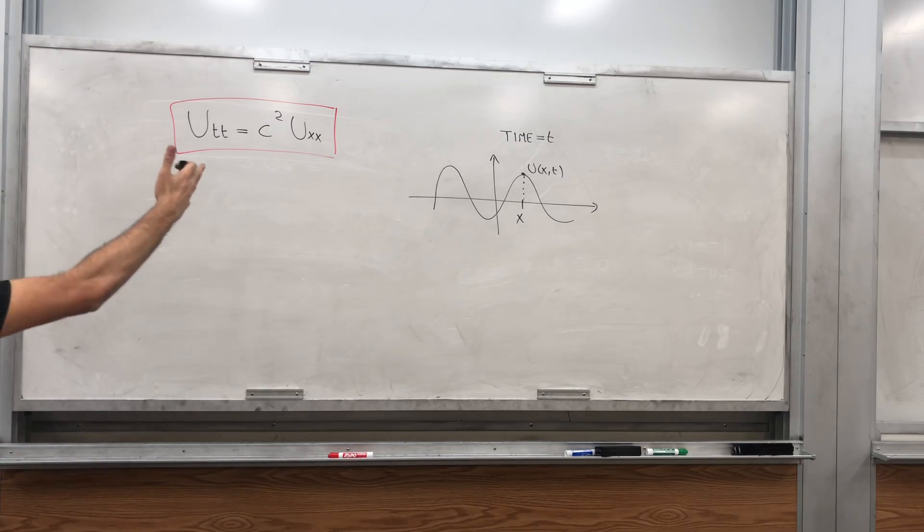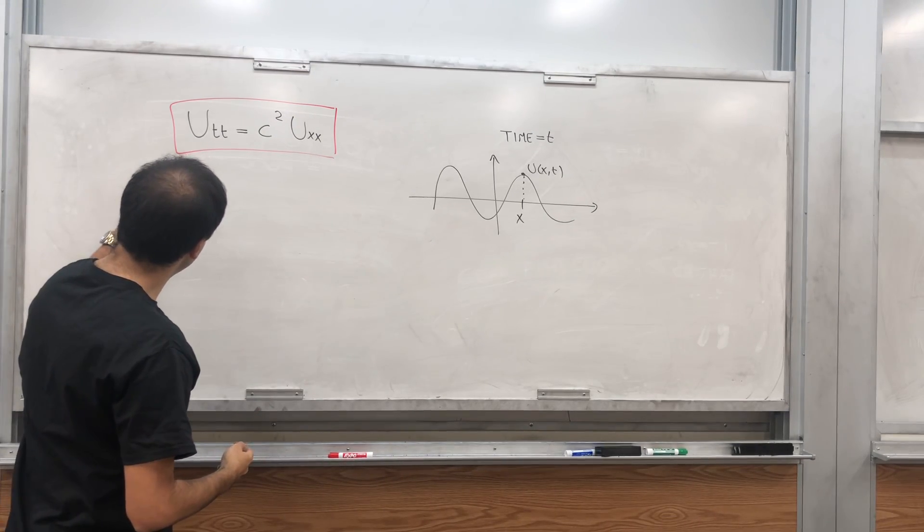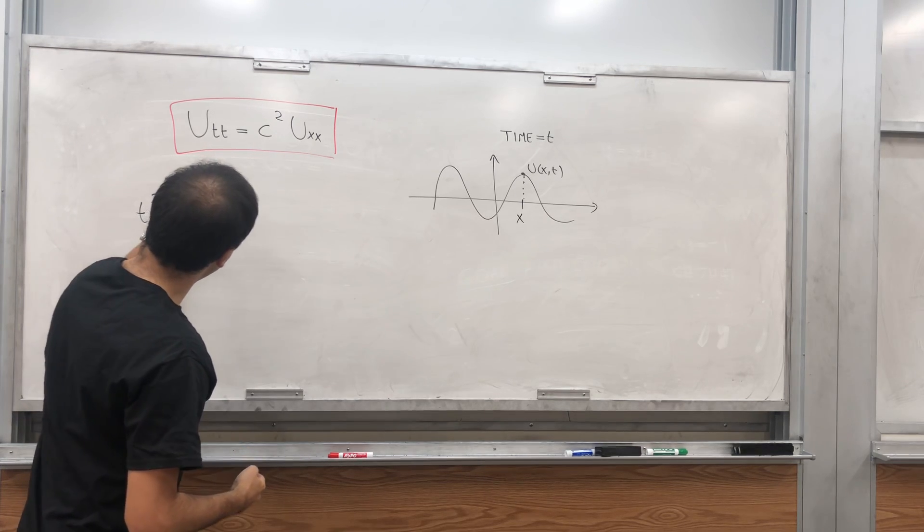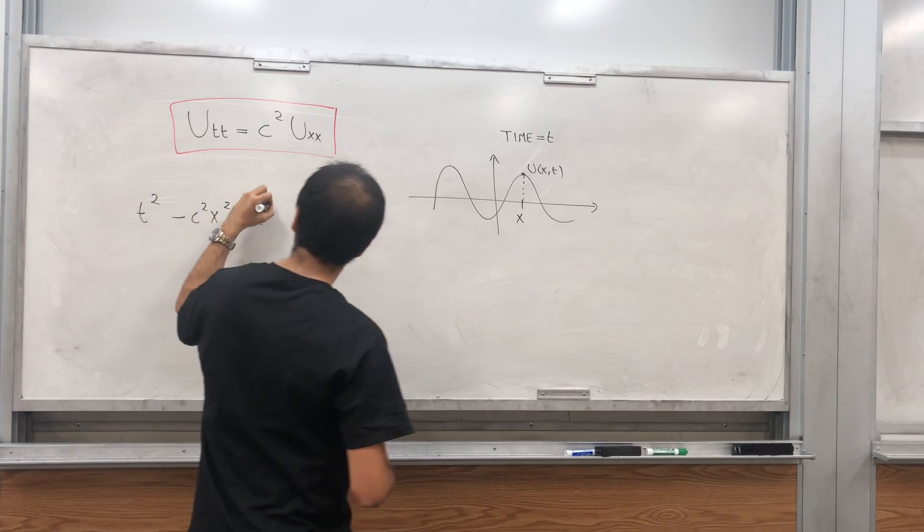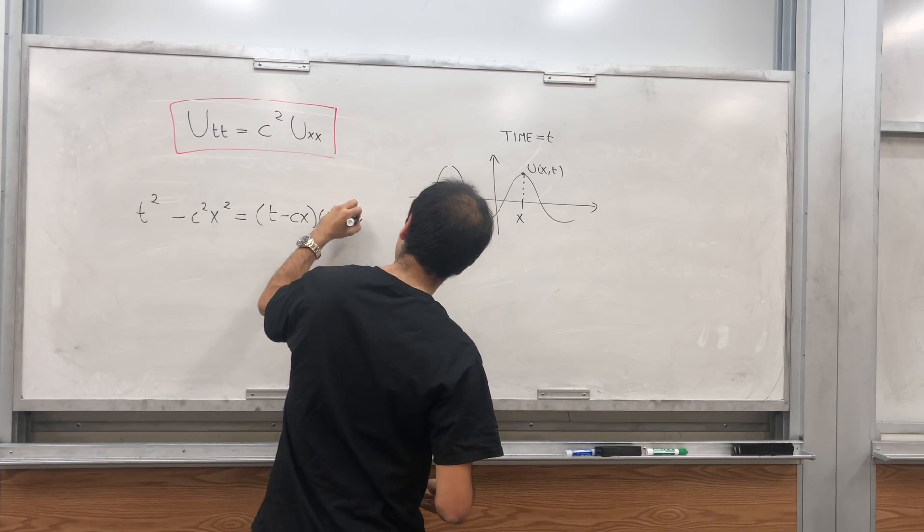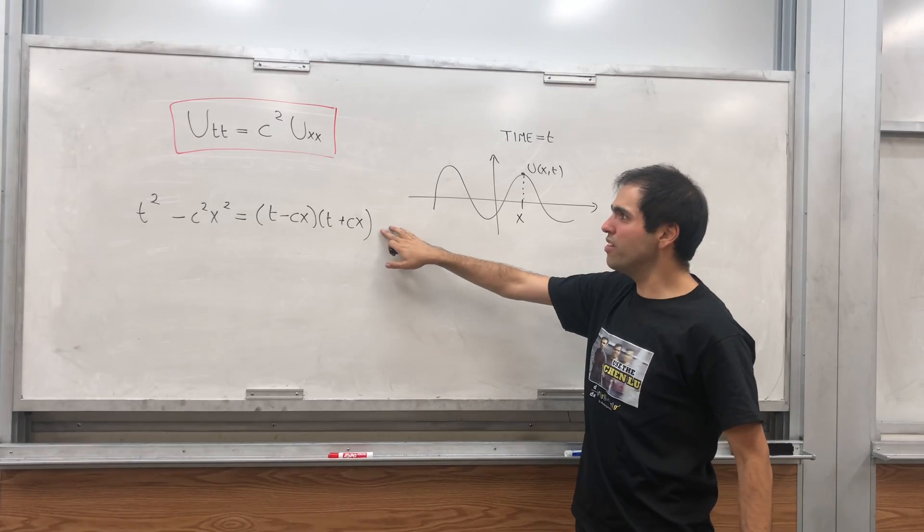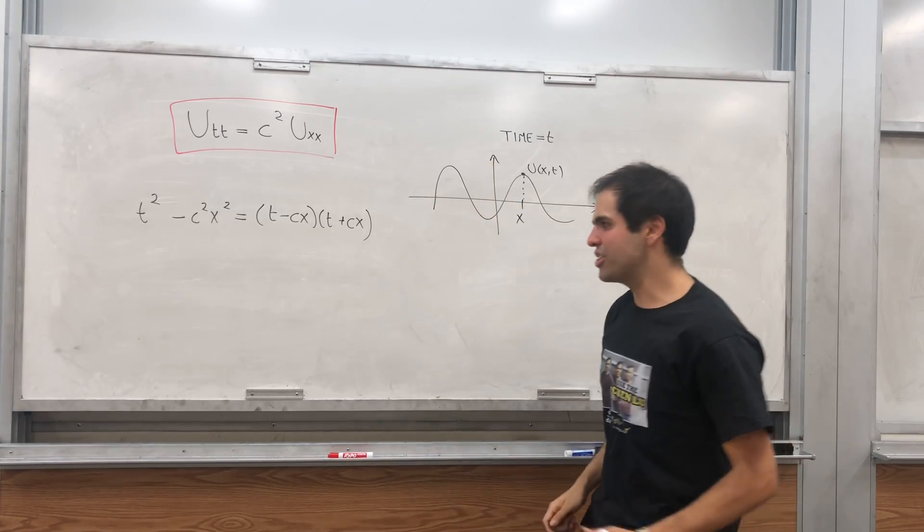And it's all based on this very silly observation that t squared minus c squared x squared can be written as t minus cx times t plus cx. And what we want to do is do this but with those differential operators.